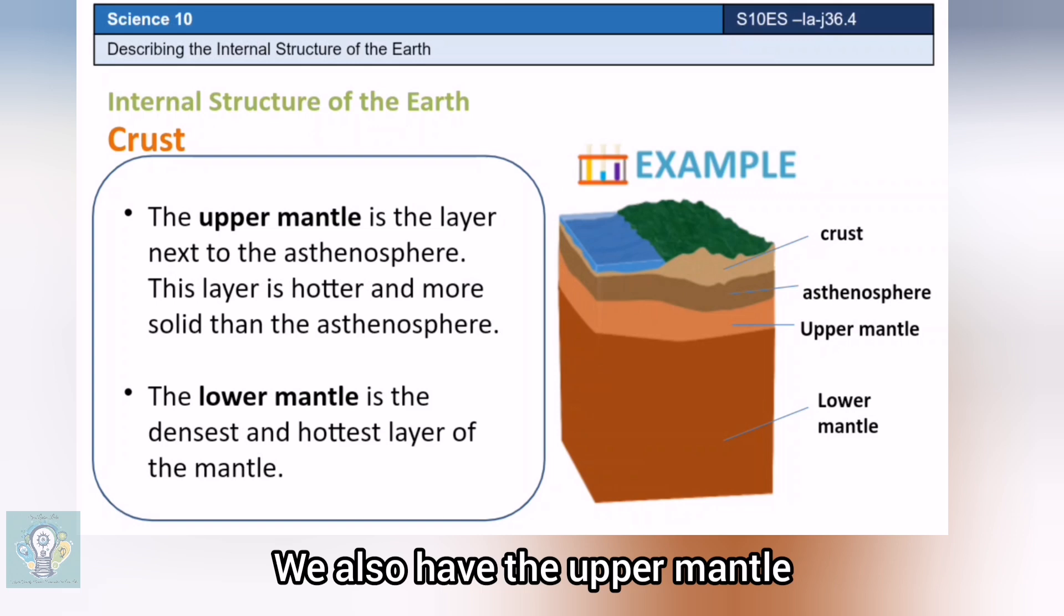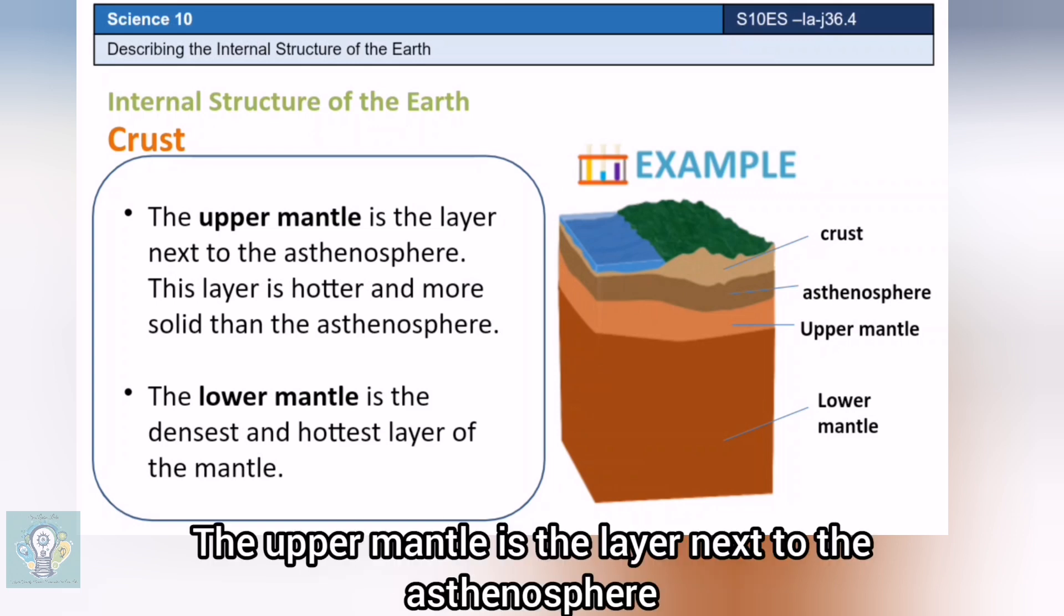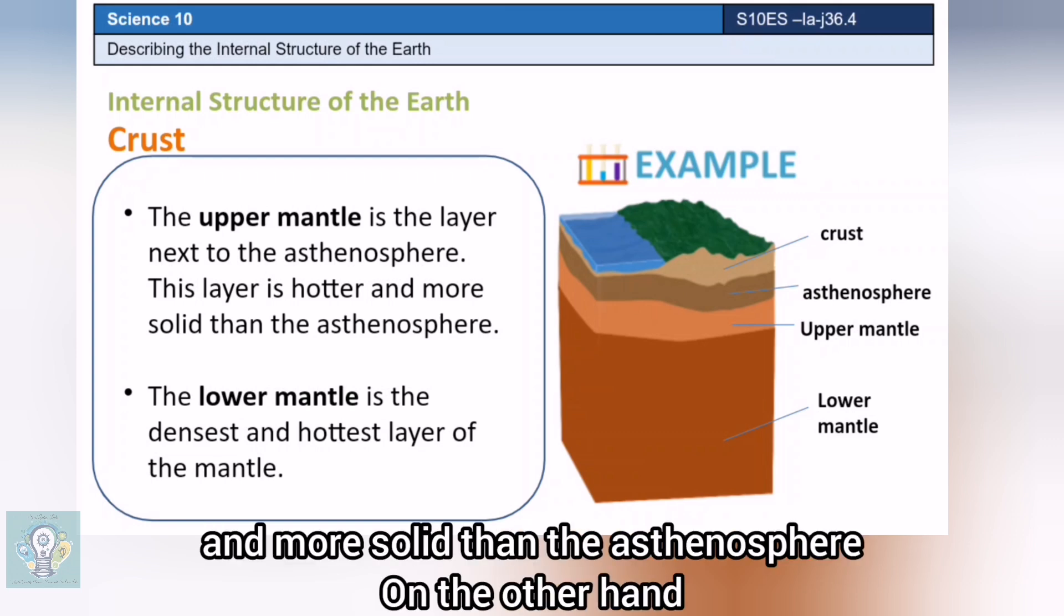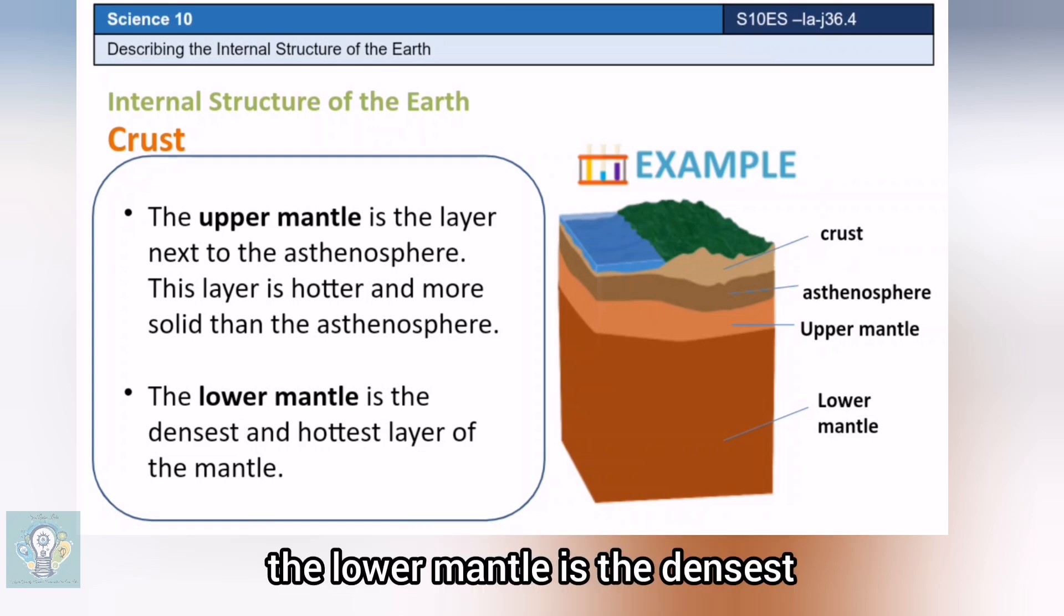We also have the upper mantle and the lower mantle. The upper mantle is the layer next to the asthenosphere. This layer is hotter and more solid than the asthenosphere. On the other hand, the lower mantle is the densest and hottest layer of the mantle.